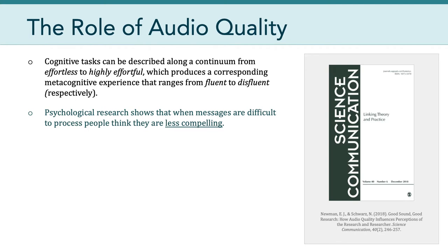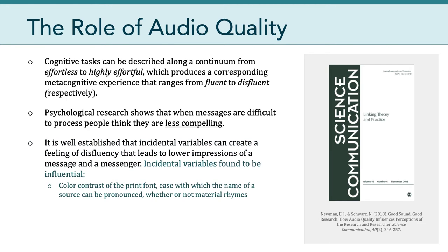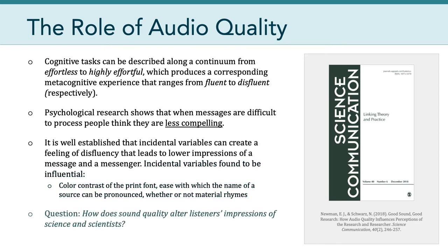Importantly, psychological research shows that when messages are difficult to process, people think they are less compelling. In fact, there's quite a bit of evidence that says that even incidental variables such as font color and difficult-to-pronounce names could create a feeling of disfluency that, in turn, leads people to generate lower impressions of the message and the messenger. Basically, it's saying that things that have nothing to do with the actual message or the messenger have been found to have an impact on what people deem compelling. Knowing this, Newman and Schwartz wanted to answer the following question: how does sound quality alter listeners' impressions of science and scientists?